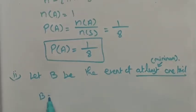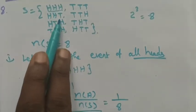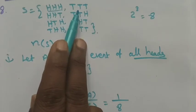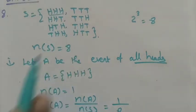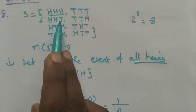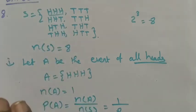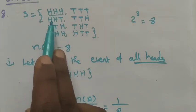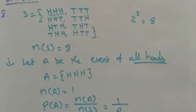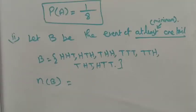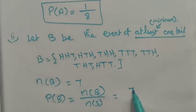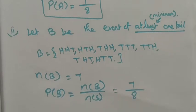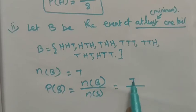In the sample space, minimum one tail and maximum all three tails — so except the first outcome head-head-head, the remaining 7 outcomes all contain at least one tail. Therefore n(B) = 7. Probability of B equals n(B) divided by n(S) equals 7 out of 8. So the probability of getting at least one tail is 7 out of 8.